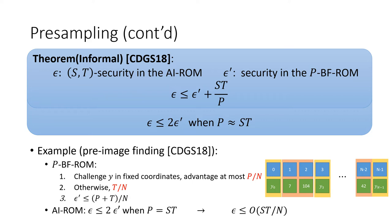With the multiplicative pre-sampling theorem, by setting p equals to s times t, we have epsilon is roughly st over n. This is the best known lower bound for pre-image finding in the AI-ROM.